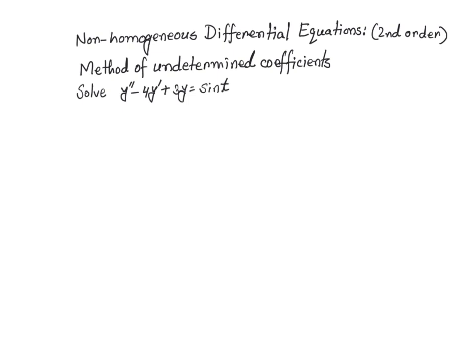In order to solve a non-homogeneous differential equation, we break it apart into two pieces. The first piece is the homogeneous part, or the corresponding homogeneous part, where instead of having sine of t on the right-hand side, we have zero. We know how to solve it because the coefficients are constant and it is easy to solve.